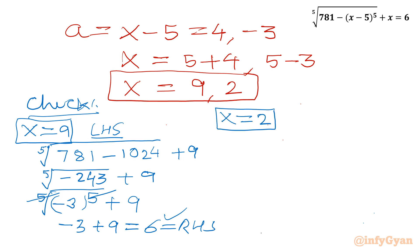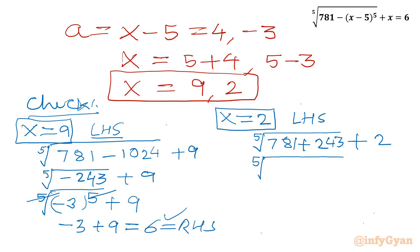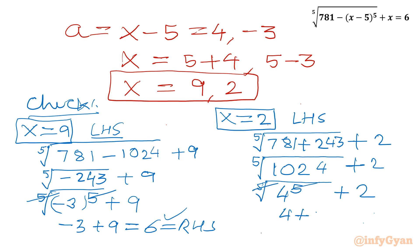Now checking x equals 2. LHS: 5th root of (781 minus (2 minus 5)^5) plus 2. Now (2 minus 5)^5 equals (minus 3)^5 equals minus 243, so we add 243. 781 plus 243 equals 1024. So: 5th root of 1024 plus 2 equals 5th root of 4^5 plus 2 equals 4 plus 2 equals 6. This equals RHS. Both solutions x equals 9 and x equals 2 are verified. This brings the end of this video.